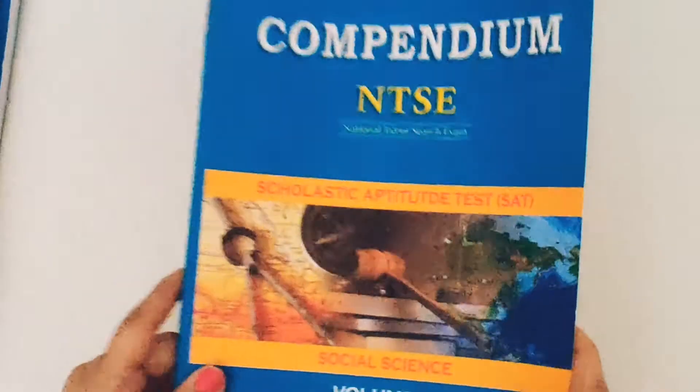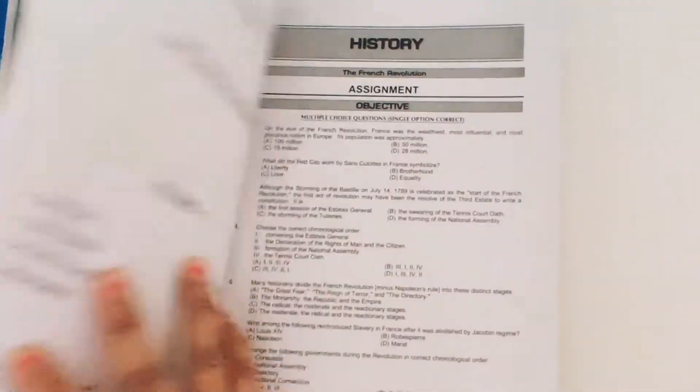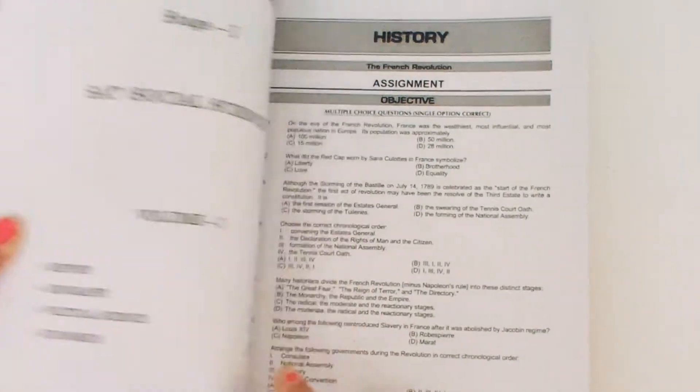Now this is the third book which is for NTSE social science preparation. This book contains history, geography, political science and economics sections.